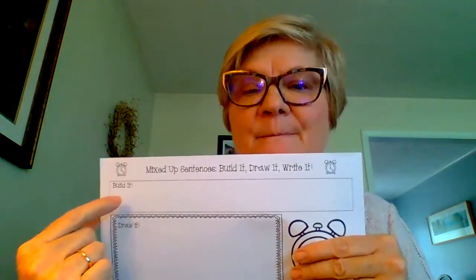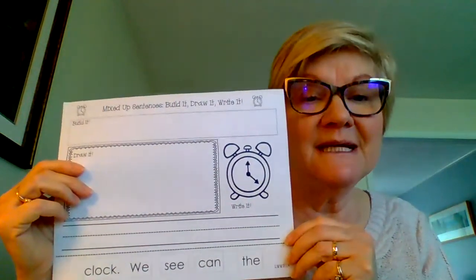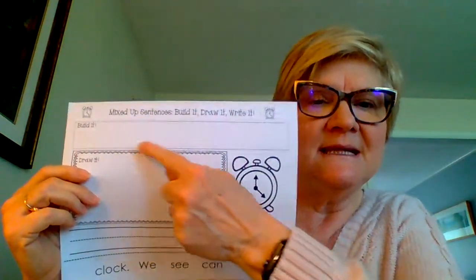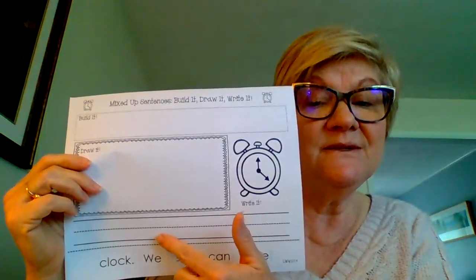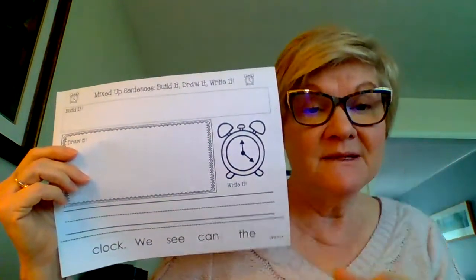This big box along the top says 'Build It.' So you're gonna take these words once you've cut them out and build the sentence there. If you want to, you can glue the words down in the build it box, or you don't have to — you just need to build the sentence in that box and then leave it.